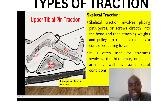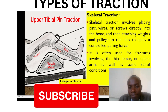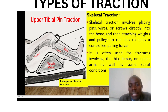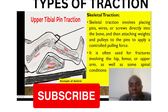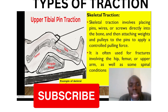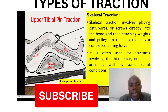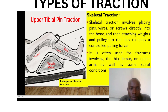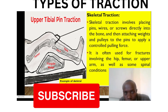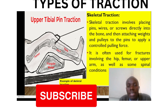Let's look at skeletal traction. Skeletal traction involves placing pins, wires, and screws directly into the bone, then attaching weights and pulleys to the pins to apply a controlled pulling force. It is often used for fractures involving the hip, the femur, and the upper arm, as well as some spinal conditions. You can appreciate that the pin is on the bone — the femur — and then it is being pulled.